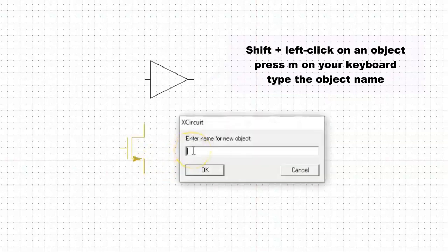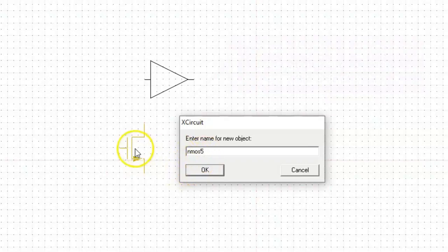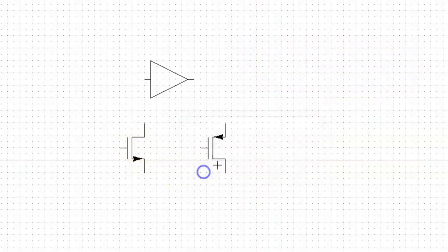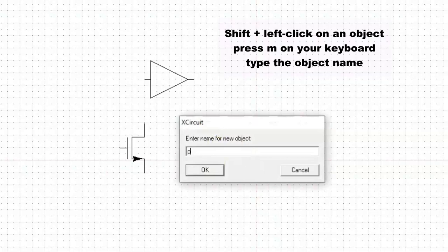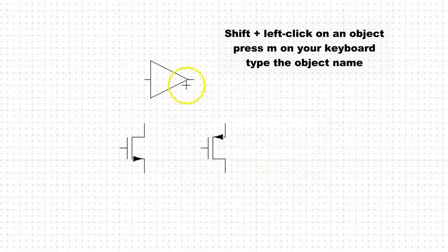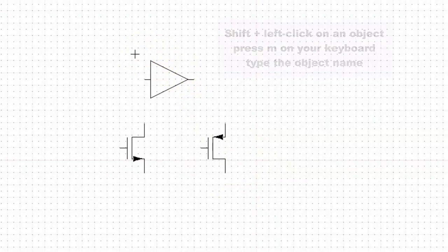Type M and then name this symbol as NMOS5, because NMOS4 is already present in some library. You can name it anything. Press OK, and then Shift-click the next symbol and press letter M again and name it PMOS5.